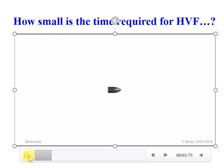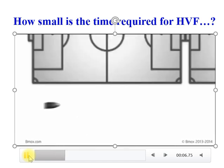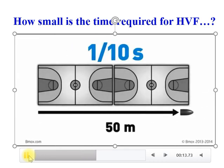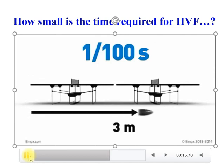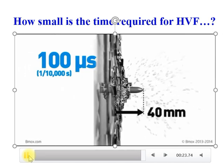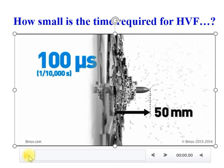Consider a bullet moving at 500 meters per second. In one second it travels 500 meters; in one-tenth of a second, 50 meters; in one-hundredth of a second, 5 meters. Now, in one ten-thousandth of a second — that is 100 microseconds — this bullet can travel only 50 mm. So our process is completed in an extremely short interval of time. We may not impart velocities exactly like 500 meters per second, but something close to that domain.